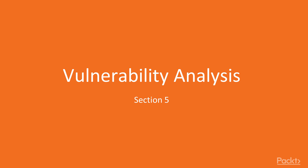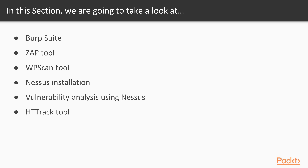Hello and welcome to Section 5 vulnerability analysis. In this section we are going to take a look at various points. First we will learn about Burpsuite tool, then ZAP tool. We will also perform WordPress vulnerability analysis using WPScan tool, then install and perform vulnerability analysis using NASS, and finally we will learn about Httrack tool.